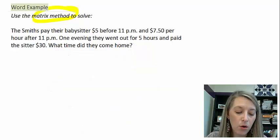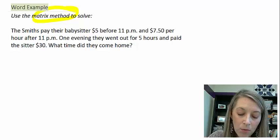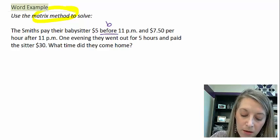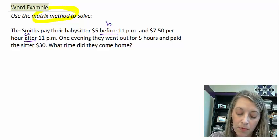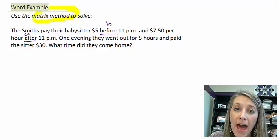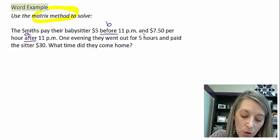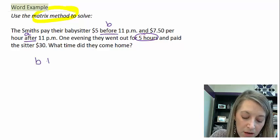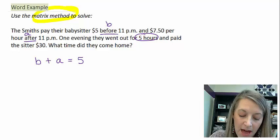The probably most difficult part of this is setting up the system of equations. So I'm going to use B for before 11 p.m. and I'm going to use A for after 11 p.m. So those are the number of hours before and the number of hours after. I know that the total number of hours is five. So the number of hours before 11 plus the number of hours after 11 has to equal five hours.